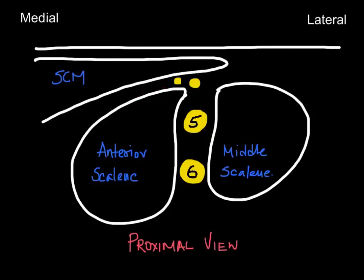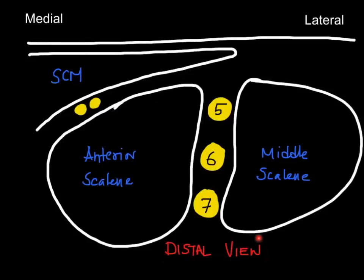As you move the probe distally, the phrenic nerve moves medially over the anterior scalene muscle. In this distal representative view again, we can see that the phrenic nerve has moved away immediately over the boundary of the anterior scalene muscle and hence lies away from the brachial plexus. This is what is important to understand.